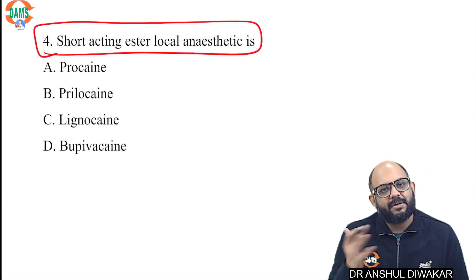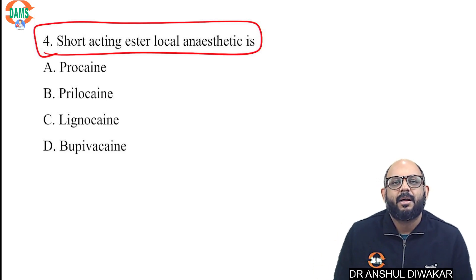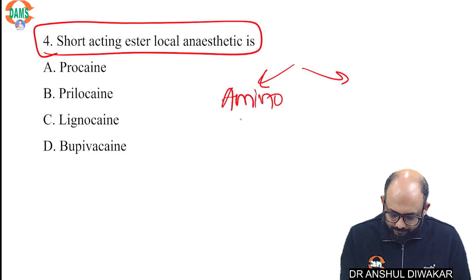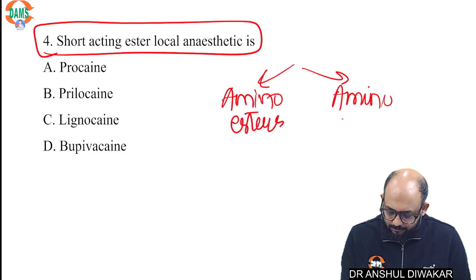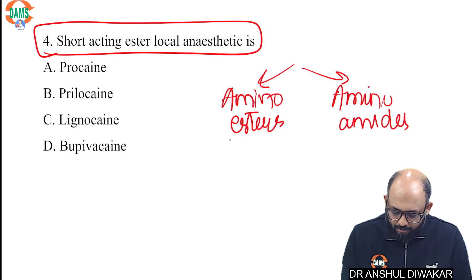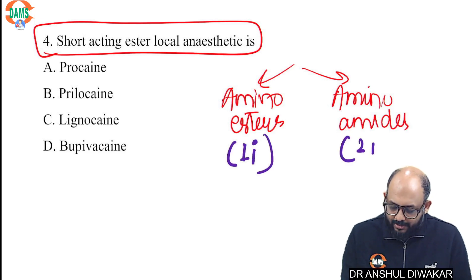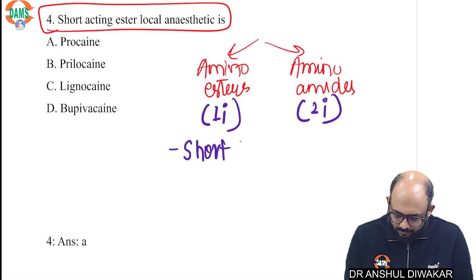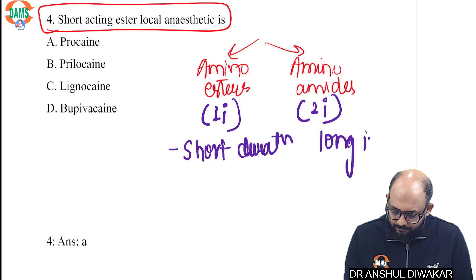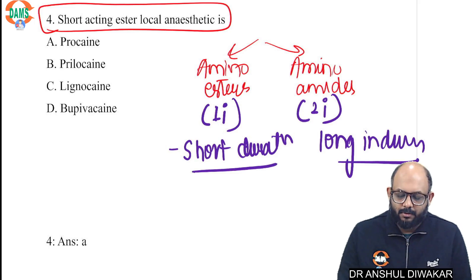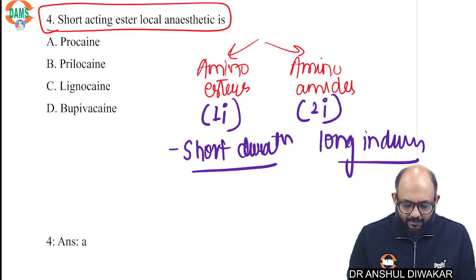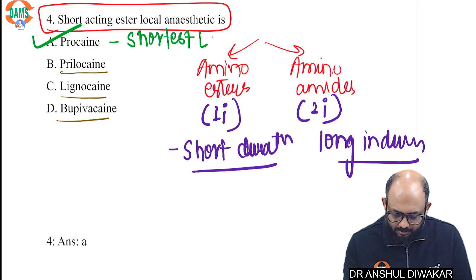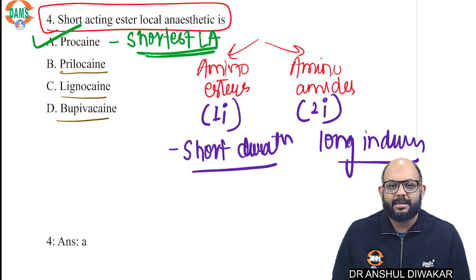Question number four: short-acting ester local anesthetic. Whenever you get a question about long-acting, short-acting, amino ester, or amino amide, remember the basics: there are two types of local anesthetics — amino esters and amino amides. All local anesthetics with one 'i' in their spelling are amino esters, and two 'i's are amino amides. Amino esters are short in duration, while amino amides are long in duration. Procaine, which has one 'i,' is the shortest-acting local anesthetic.